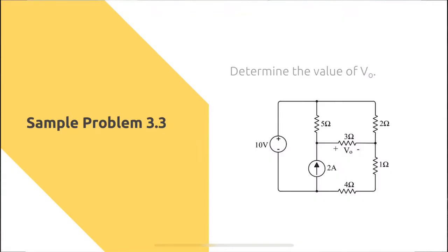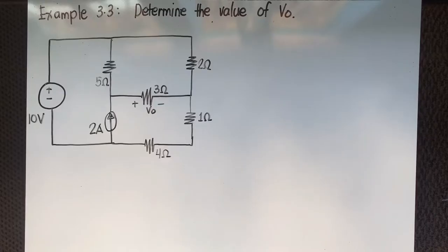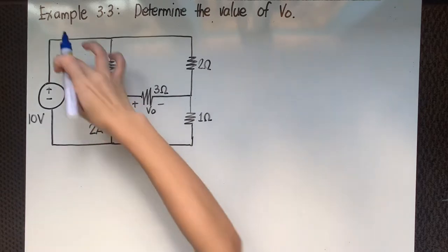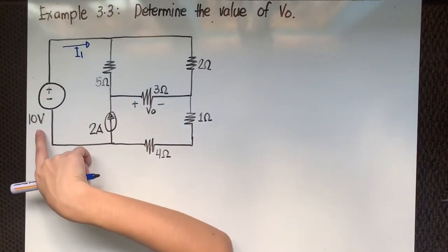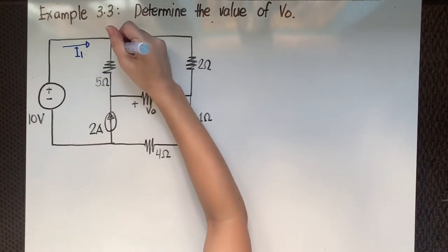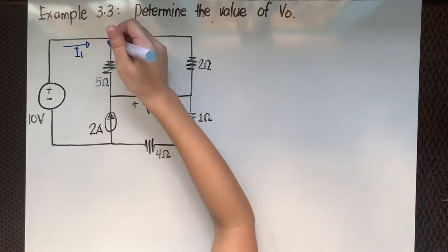Let's try to solve Example 3.3, which contains an independent current source. We'll learn how to solve circuits with an independent current source. Before we do that, let's assign directions of current on our network. Starting with this branch, let's say we have I sub 1 here — the current supplied by the 10-volt source, entering this junction.